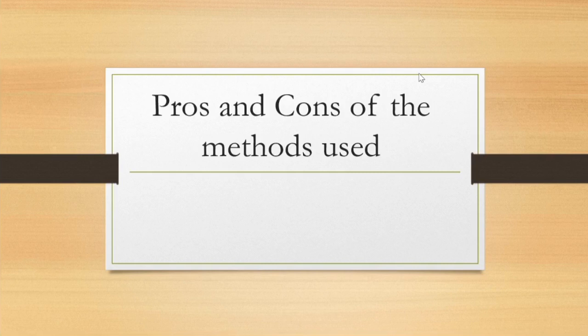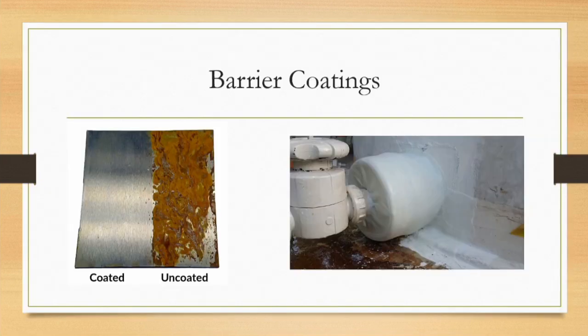So of course, there are pros and cons in the methods used. First is the barrier coatings. Its pros: it protects metal surfaces against rust, oxidation, corrosion, and it also protects metal from other chemicals. While the cons: it is brittle and it has poor adhesion.